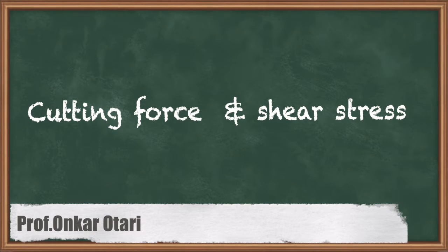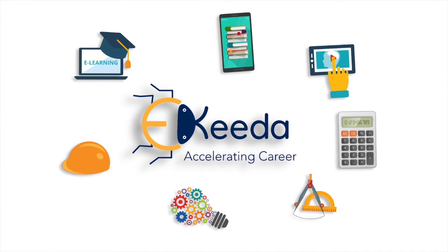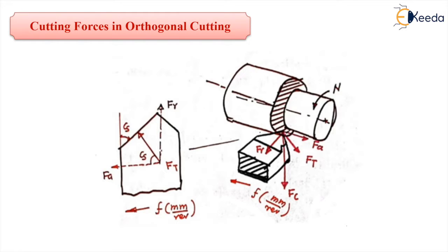Students, let us start with the cutting forces in orthogonal cutting operation. Here in the diagram, this is the diagram showing the step turning operation on the cylindrical bar. This part is the machined part, this part is the part to be machined by this tool. This is a single point tool and the tool is given feed in this direction, and this hatched portion shows the surface undergoing machining operation.